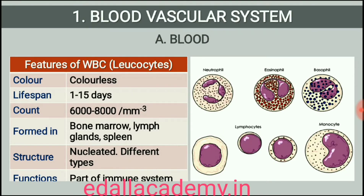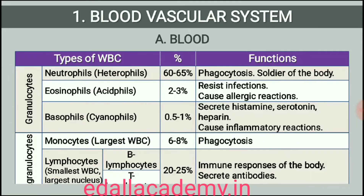Leukocytes are also known as white blood cells (WBC) as they are colorless due to the lack of hemoglobin. They are nucleated and are relatively lesser in number, which averages 6,000 to 8,000 per cubic millimeter of blood. Leukocytes are generally short-lived. We have two main categories of WBCs, granulocytes and agranulocytes. Neutrophils, eosinophils and basophils are different types of granulocytes, while lymphocytes and monocytes are the agranulocytes.